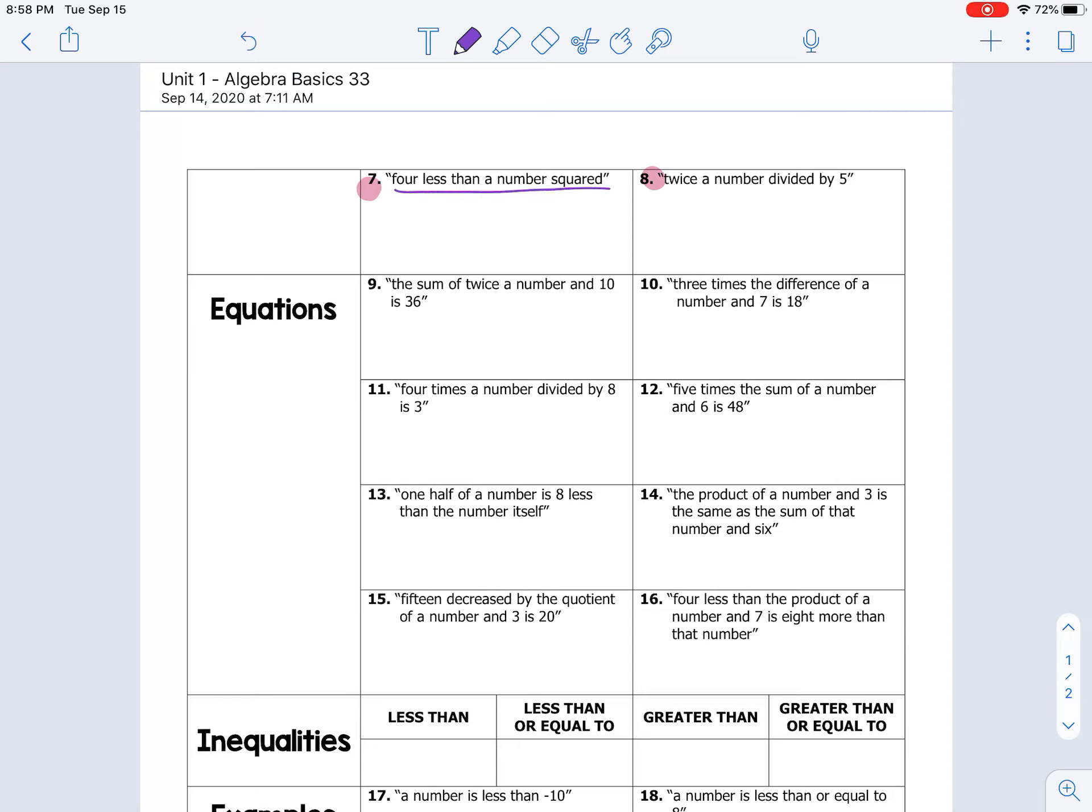So number seven, we're looking for four less than a number squared. So less than, remember, is a turnaround phrase. So we have to put the second part first. A number squared is n squared. Less than is minus, and we are subtracting four. So the answer is n squared minus four.